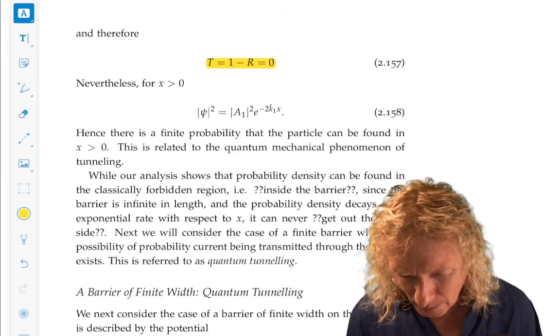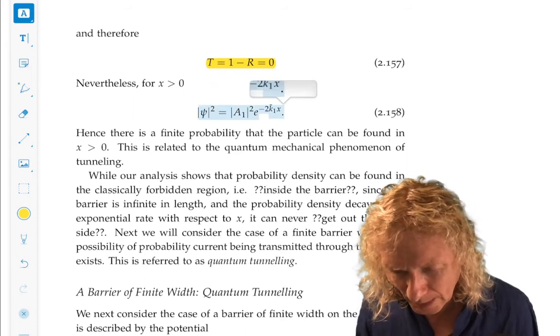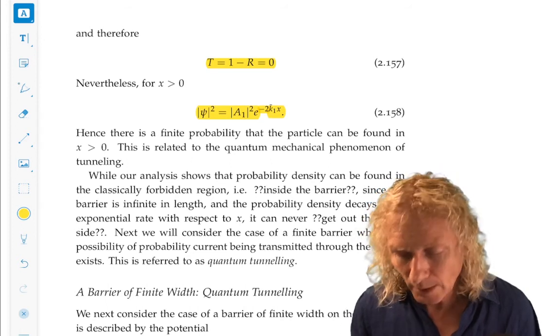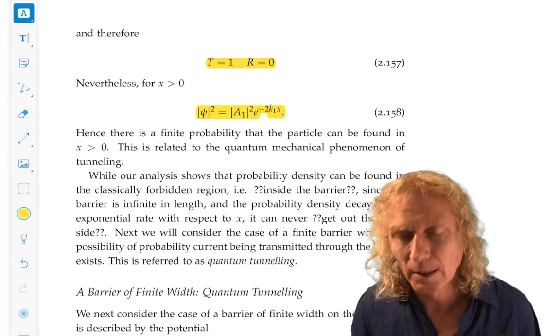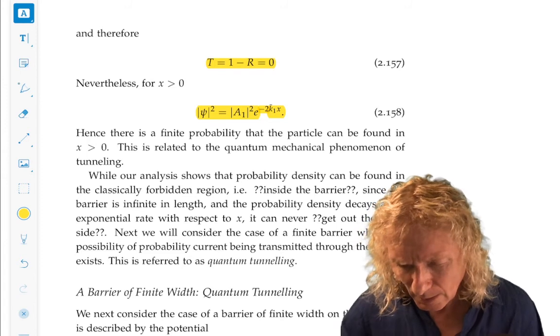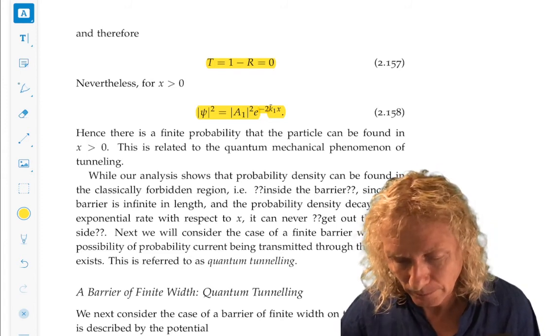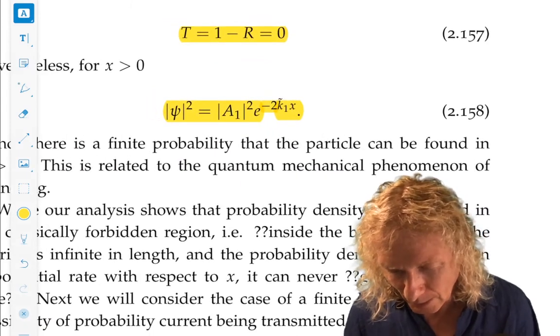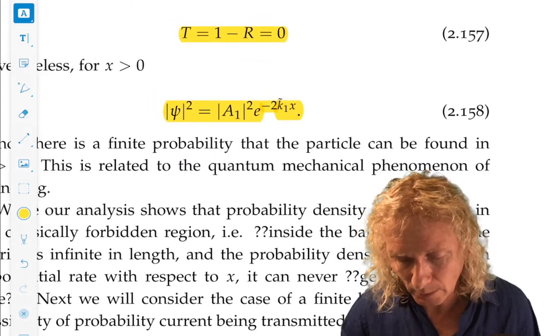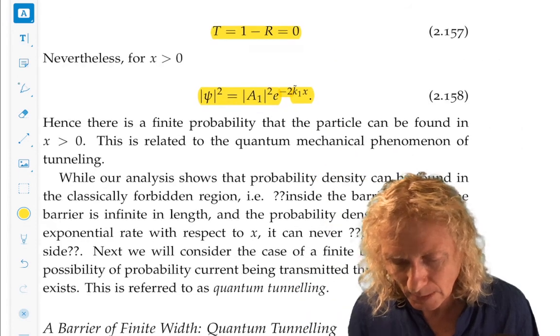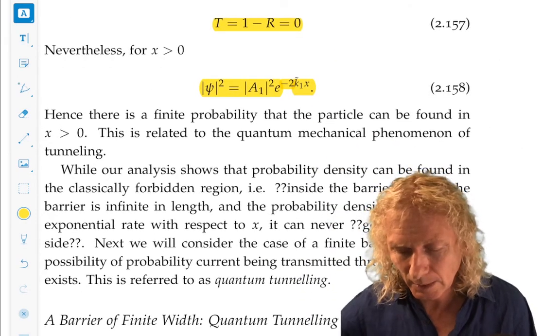But, nevertheless, if you look at the modulus squared of the wave function in x greater than zero, there is some probability density. It decays to zero quite quickly. But there is some probability density.